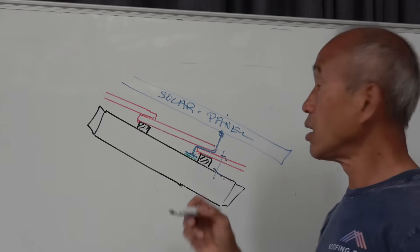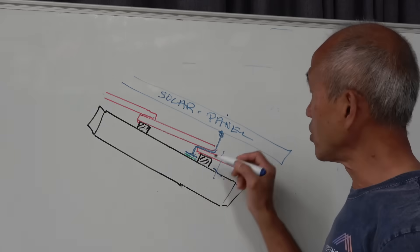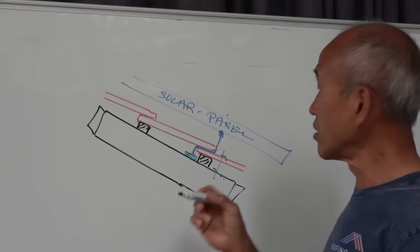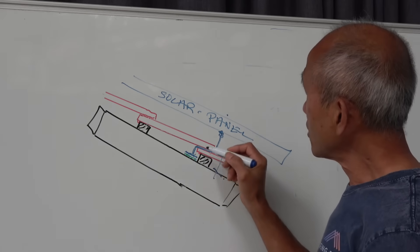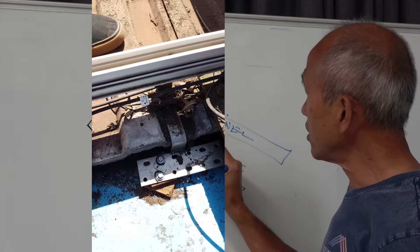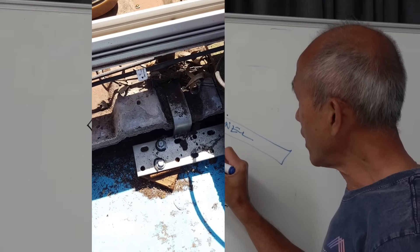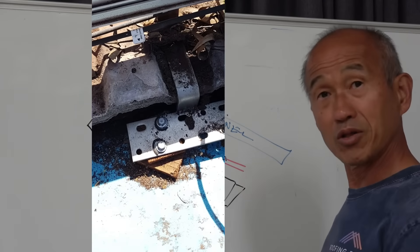And you have to bolt the anchor to the rafter because the rafter is solid. You don't do it onto the batons. So you've got to put a packer in there and then you put a screw onto the rafter.